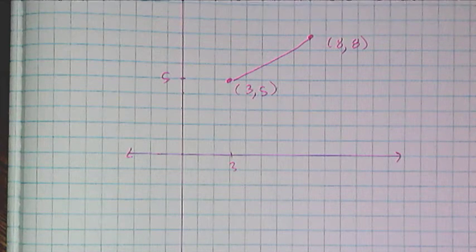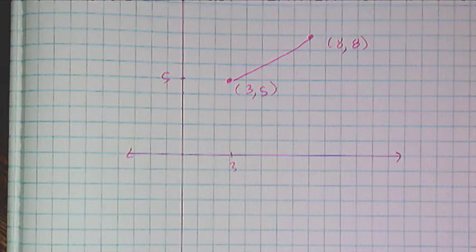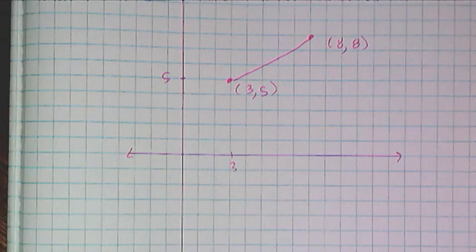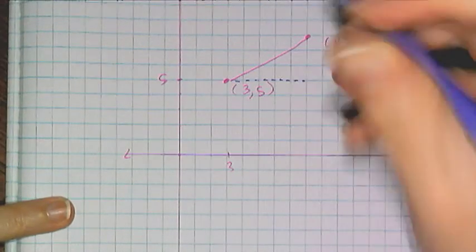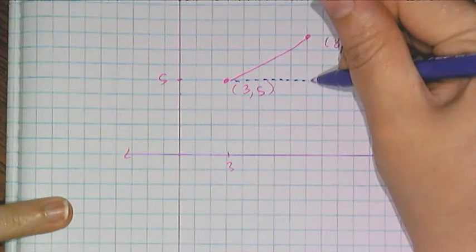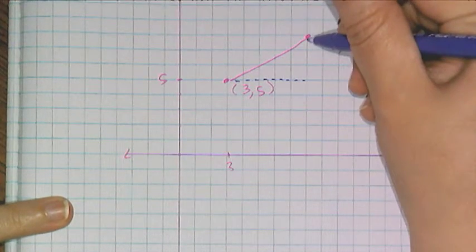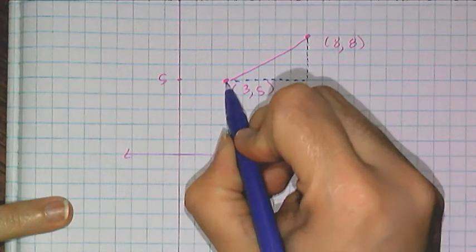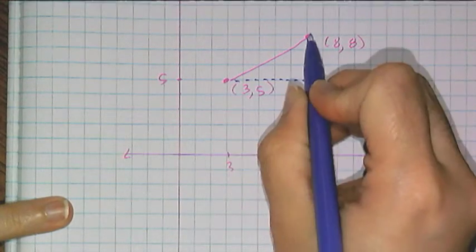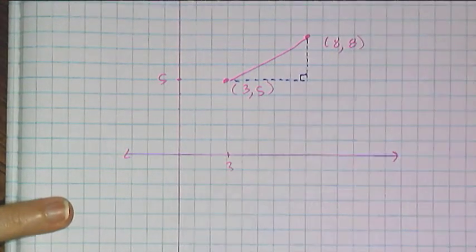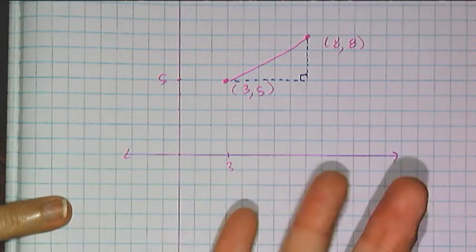But because of the Pythagorean theorem, I can turn this length here into the hypotenuse of a right triangle by just drawing in a horizontal change from one point to the next and then the vertical change from one point to the next. So I have to go this way horizontally, that way vertically, which gives me a right angle and a right triangle.